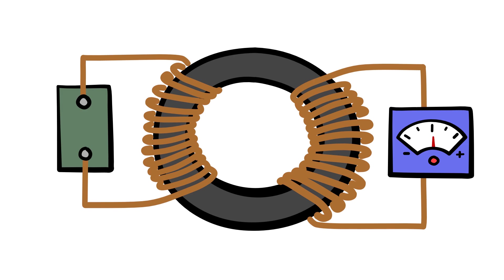He also discovered that by stopping the current in the first wire, it was able to produce a brief current in the second wire, but this time in the opposite direction. It was this discovery that would later become known as Faraday's law of electromagnetic induction.